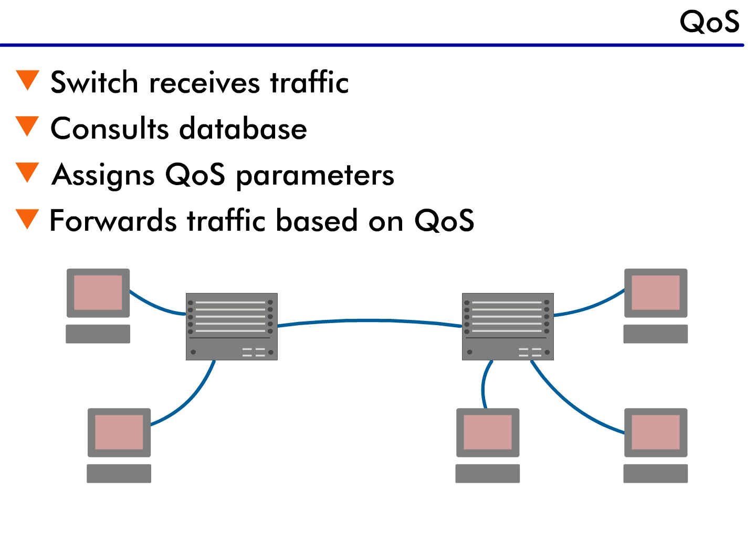When a switch receives traffic, it checks its database and assigns the quality of service that the traffic requires. If a switch receives traffic and it's unable to determine the QoS level required, it uses the LDAP protocol to request assistance from other devices. So now, when a busy switch receives non-priority data at the same time it receives time-sensitive video traffic, what happens?